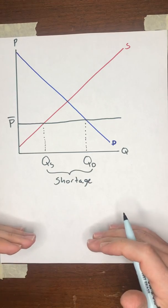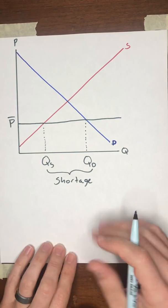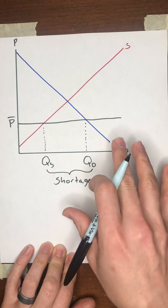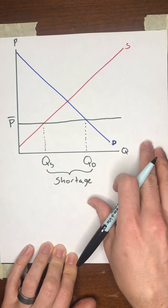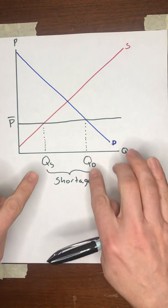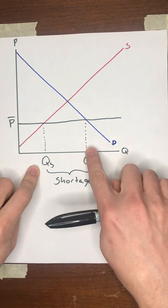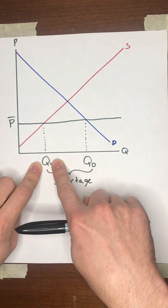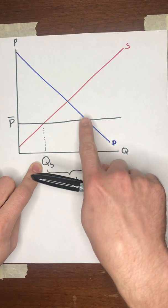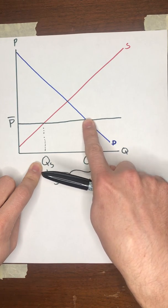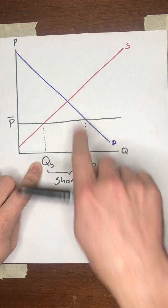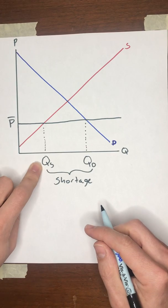That's the first effect of a price ceiling. And there are a number of effects that follow from that. But it's important for you to note that it's the shortages that are driving everything. All of the other results that we talk about are happening because the buyers are trying to compete with each other to buy up the scarce number of units that are available, but they're not allowed to compete with each other by raising the price.